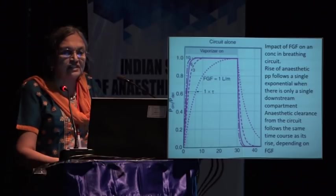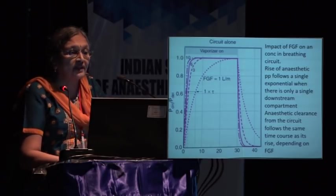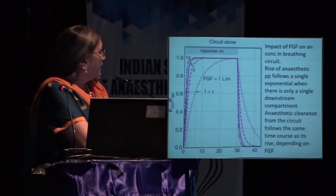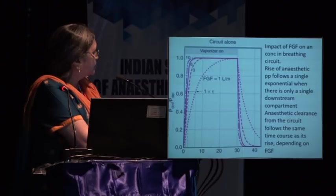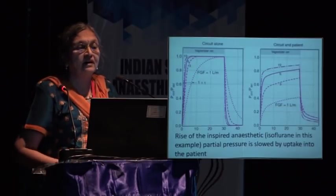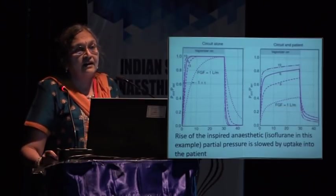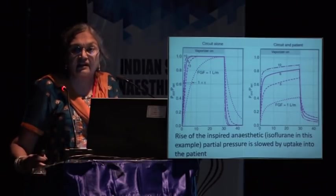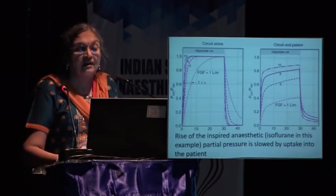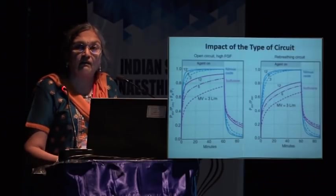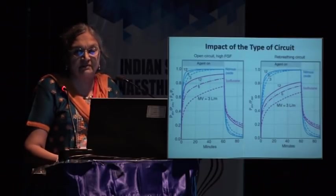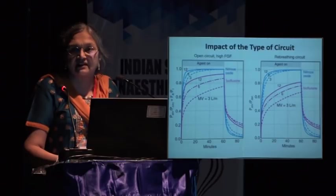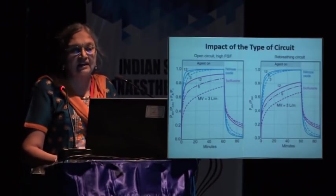The impact of fresh gas flow can be seen clearly in diagrams: as fresh gas flow is reduced, more time is needed for circuit concentration to build up. When the circuit is connected to the patient, uptake by the patient further reduces the concentration and increases the time for alveolar concentration to build up. Circuit type also matters — an open circuit gives a faster rise in alveolar concentration compared to a rebreathing circuit.